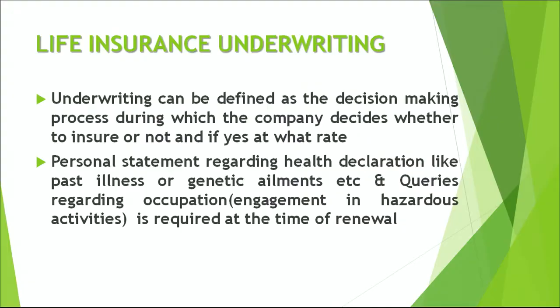Life insurance underwriting can be defined as the decision-making process during which the company decides whether to insure or not, and if yes, at what rate. It is basically a process by which the underwriters gauge whether a person can be given a life insurance or not, whether there is a moral or a physical hazard, and if the person can be given an insurance, what should be the rate.